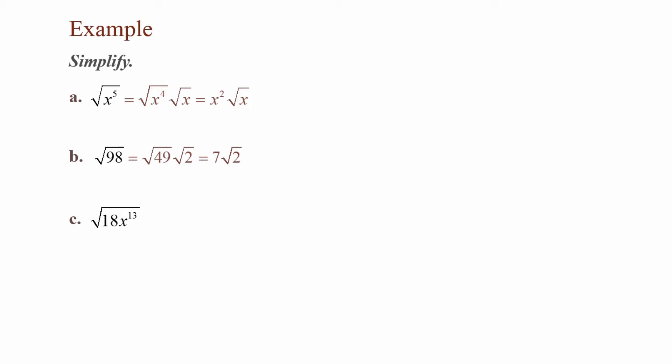For Part C, I have the square root of 18 times x to the 13th. I can rewrite 18 as 9 times 2, and I can rewrite x to the 13th as x to the 12th times x. This gives me the square root of 9x to the 12th times the square root of 2x. The square root of 9 is 3, and the square root of x to the 12th is x to the 6th. So this equals 3x to the 6th times the square root of 2x.